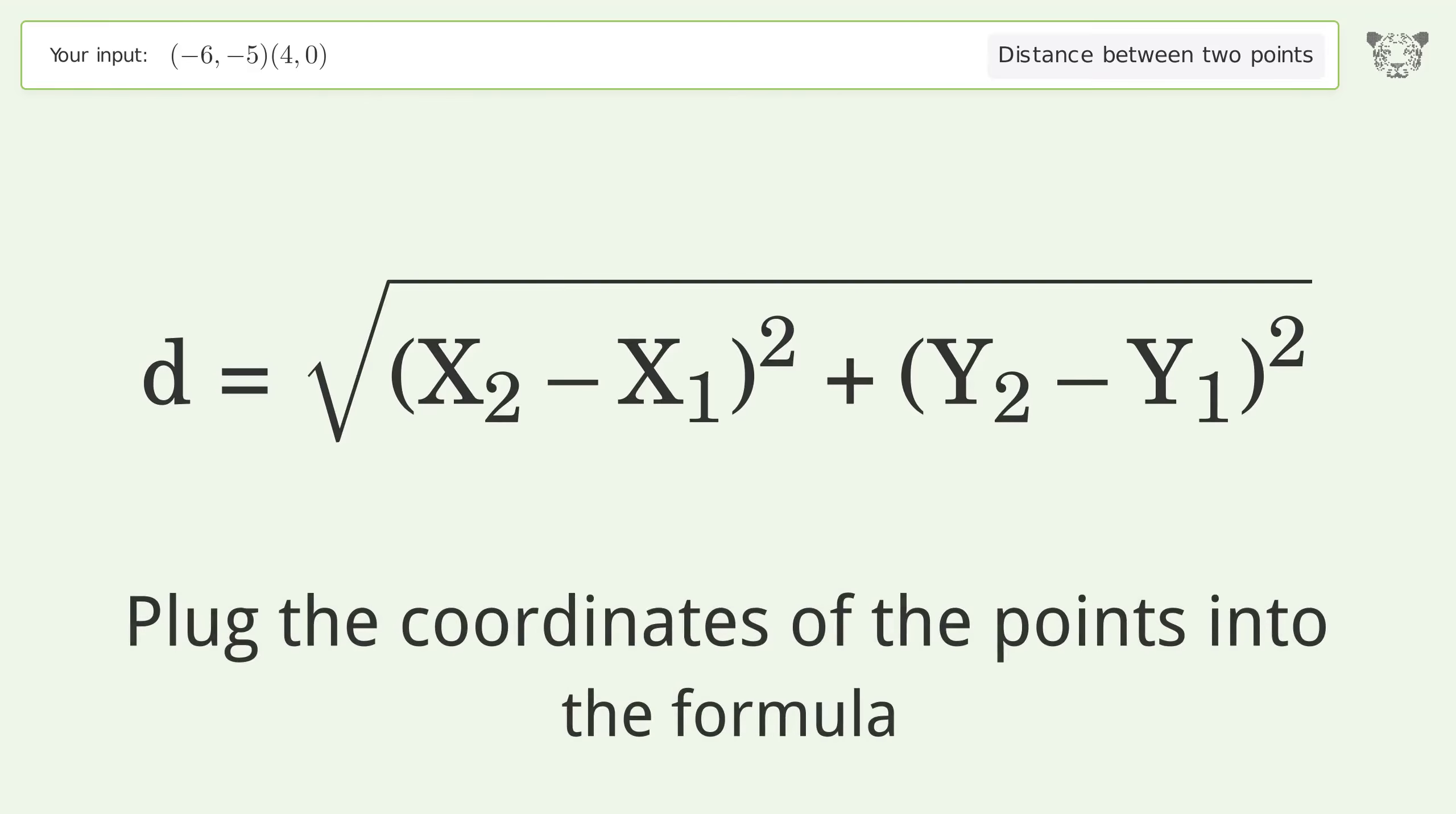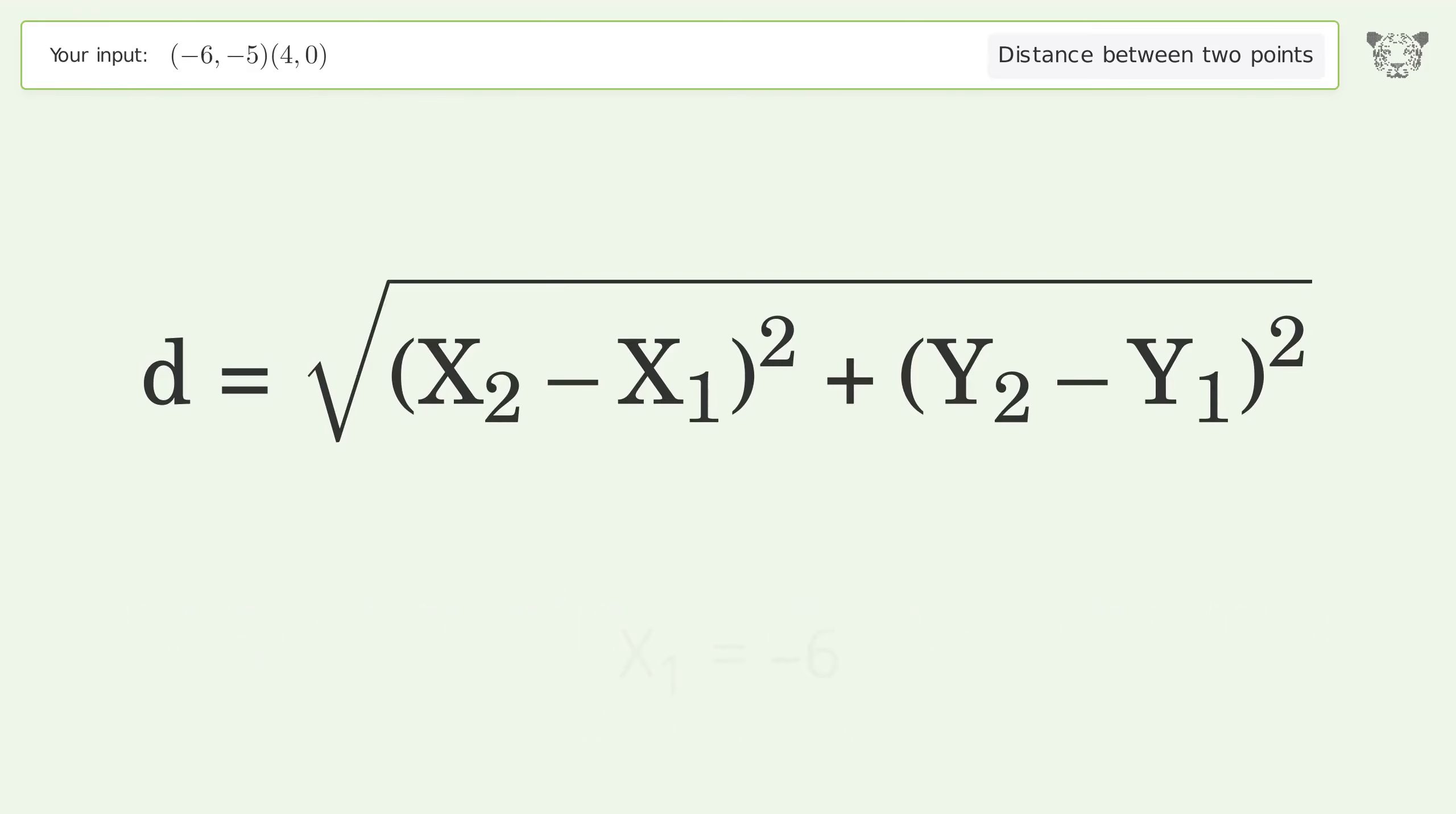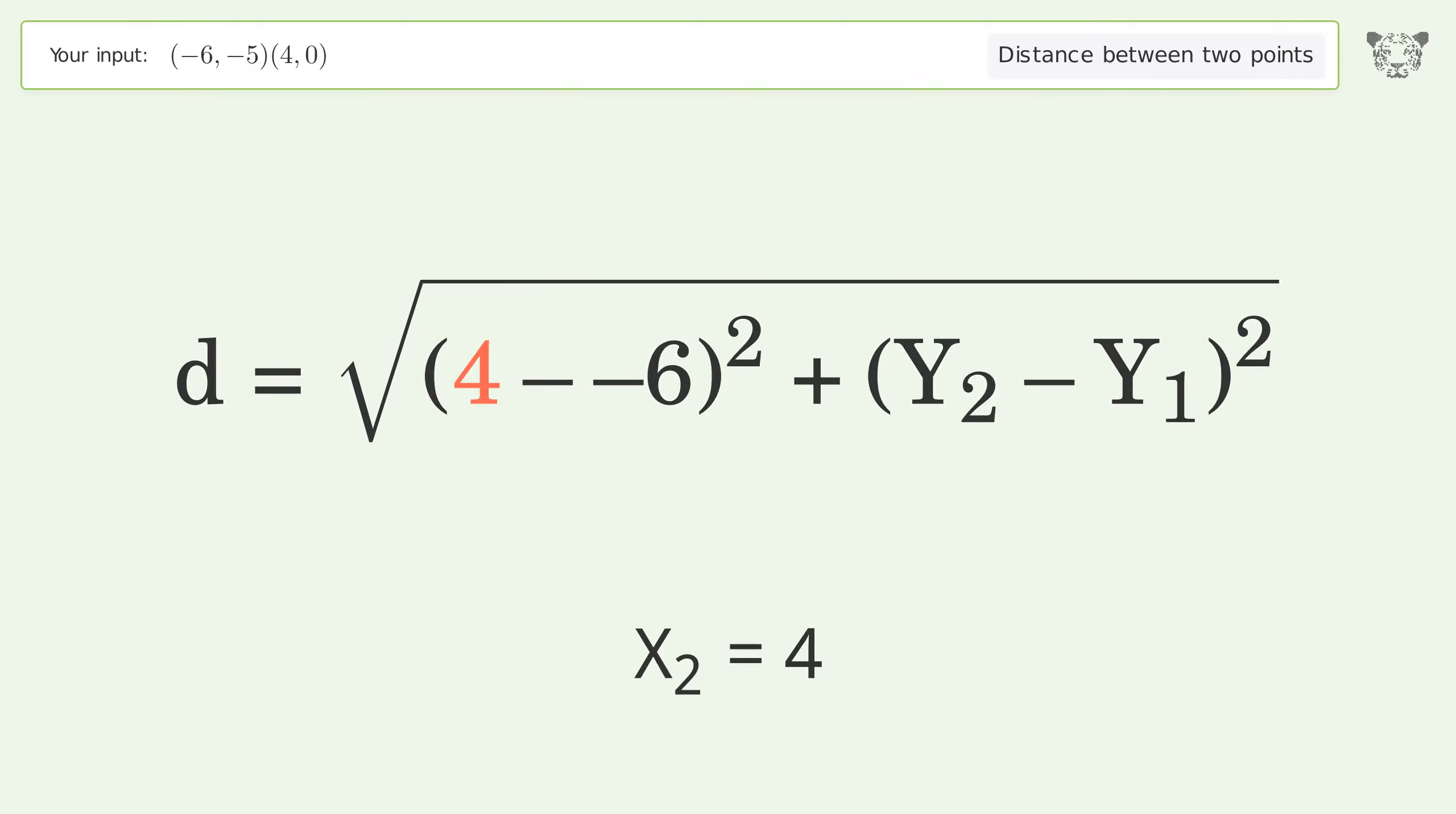Plug the coordinates of the points into the formula: x1 equals negative 6, x2 equals 4, y1 equals negative 5, y2 equals 0.